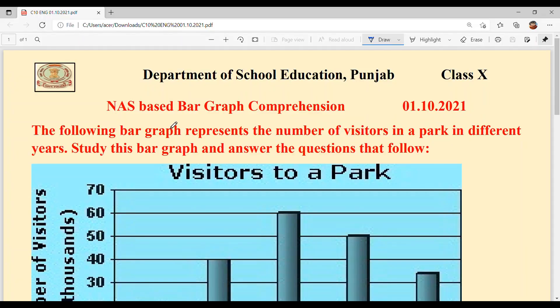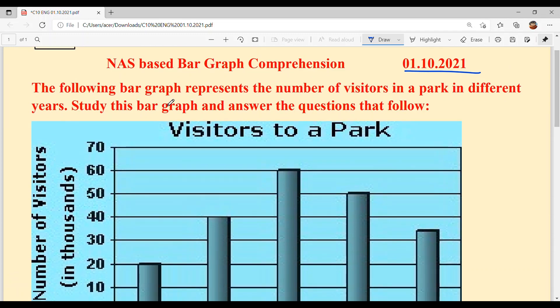Hello everyone, welcome back to Suksham Amki classes. Today we are going to solve NAS based bar graph comprehension of class 10th and the date is 1st October 2021. The following bar graph represents the number of visitors in a park in different years. Study this bar graph and answer the questions that follow.